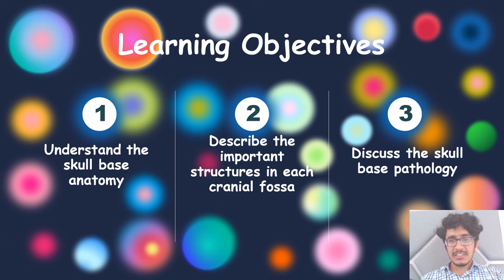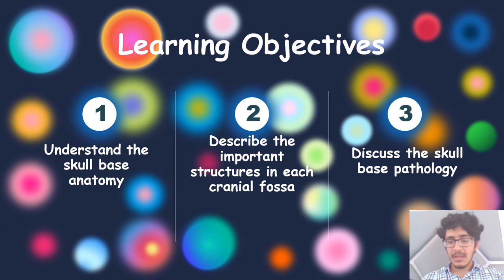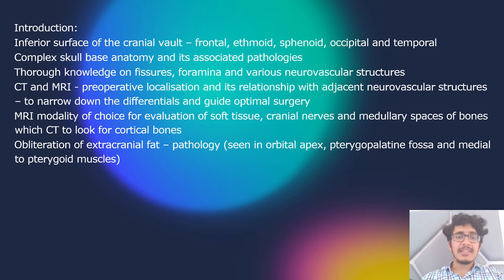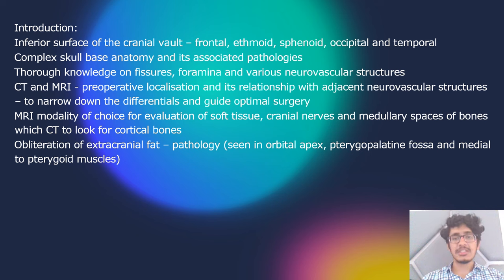I'll discuss a case series on skull base lesions. Before we jump into skull base pathology, we should first understand the anatomy, various tissues, foramina, and neurovascular structures. CT and MRI are the imaging modalities of choice, helping not just in narrowing the differential but also in pre-operative localization and assessing relationships with adjacent neurovascular structures.